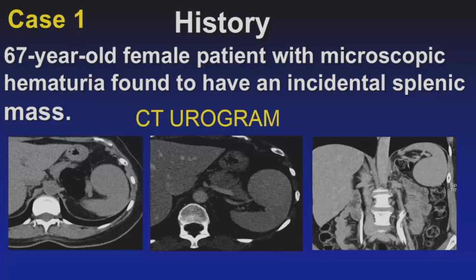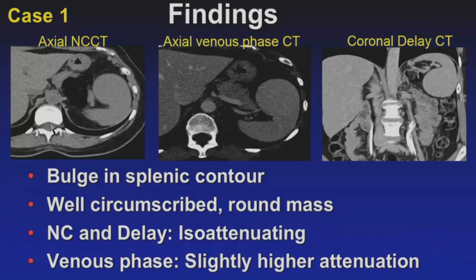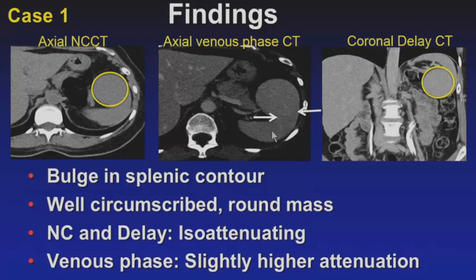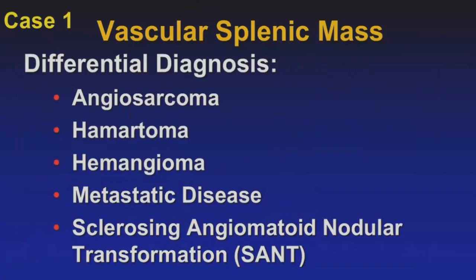Let's look at the findings. This was a urogram with a non-con image, a venous or nephrographic phase image, and a coronal delayed image. On all of these images, there's a bulge in the splenic contour and a well-circumscribed round mass. On the non-contrast and delayed images, the attenuation of this mass is identical to the background spleen, and on the venous phase image the mass was just slightly more high attenuation. The differential for a vascular enhancing splenic mass includes angiosarcoma, hamartoma, hemangioma, metastatic disease, and sclerosing angiomatoid nodular transformation — the SANT lesion.